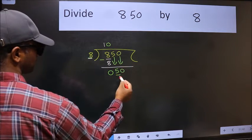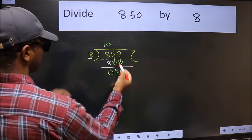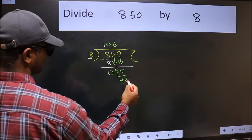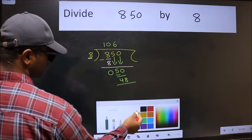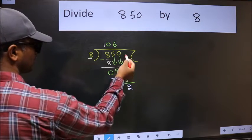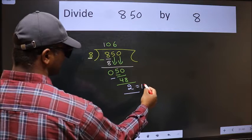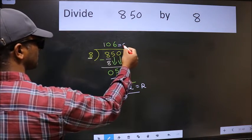Now 50 - a number close to 50 in the 8 table is 8×6=48. Now we should subtract, we get 2. No more numbers to bring down, so we stop here. This is our remainder and this is our quotient.